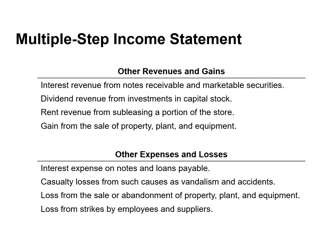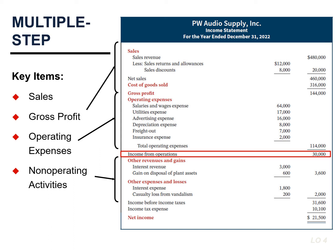Non-operating activities are reported in the income statement as other revenues and gains, and other expenses and losses. The net amount from other revenues and gains is added, and the net amount from other expenses and losses is subtracted from income from operations to arrive at income before income taxes. This amount is then multiplied by the company's income tax rate to arrive at income tax expense, which is subtracted to arrive at net income.